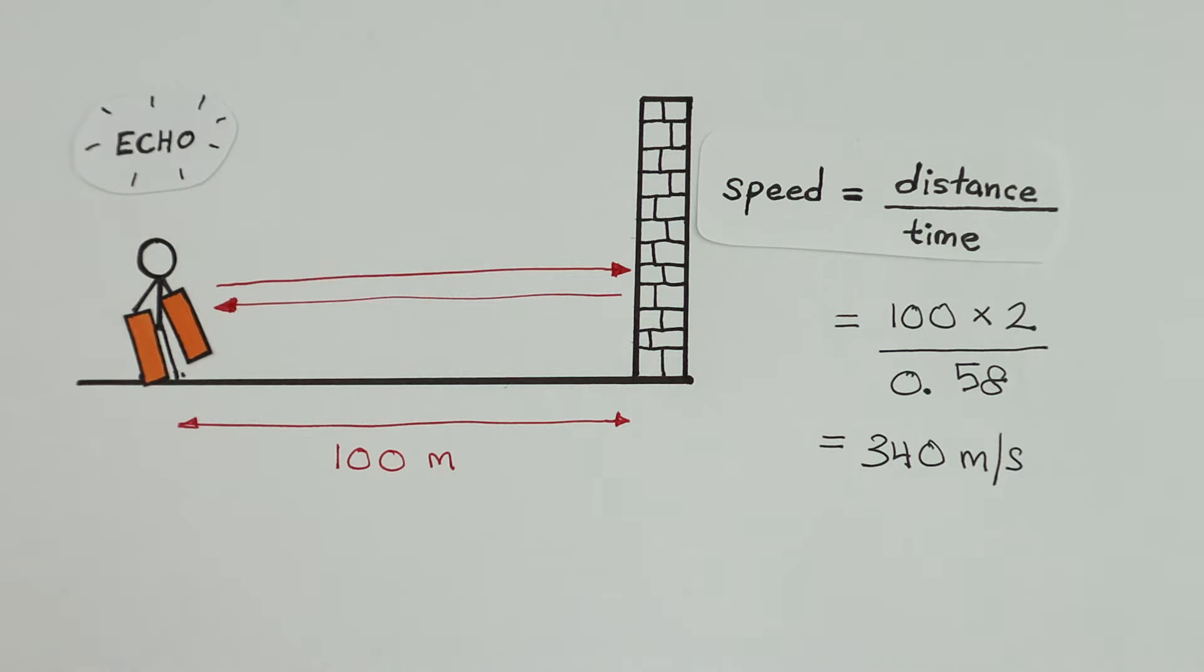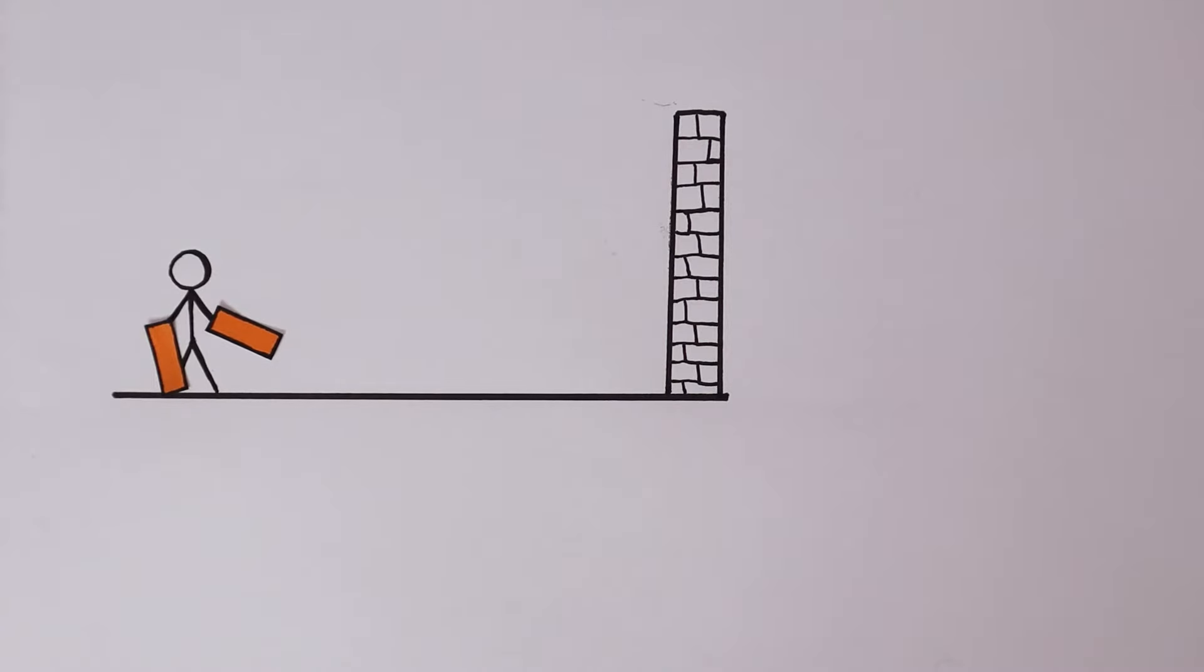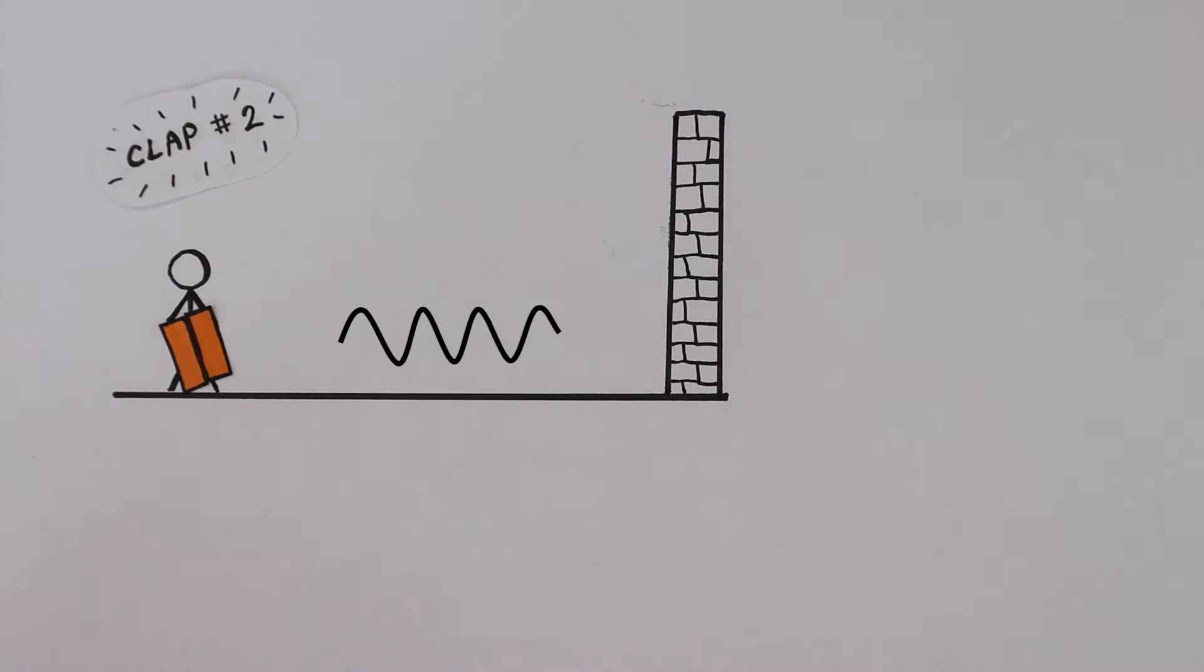To reduce human error, let's try this. Get this man to clap the blocks 10 times. After the first clap, the sound wave travels there and back. And when he hears the first echo, he claps a second time.